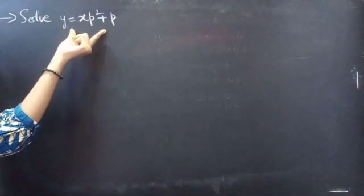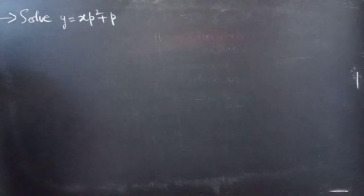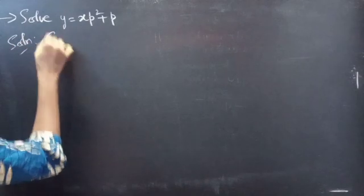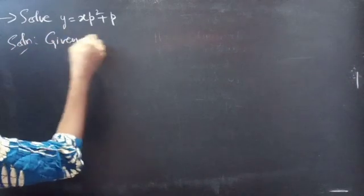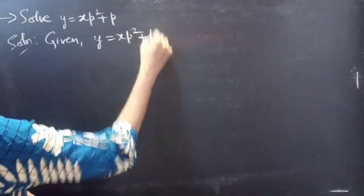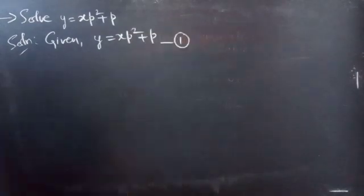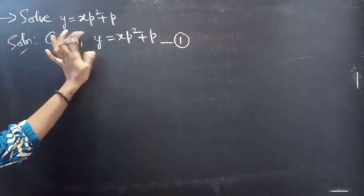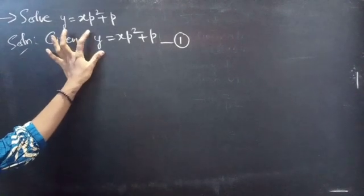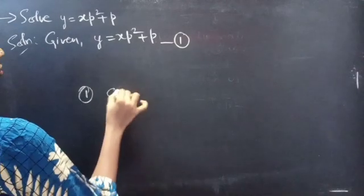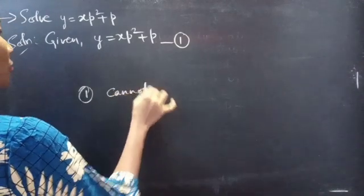Problem to solve: y equals xp squared plus p. Given equation y equals xp squared plus p, considered as equation 1. We notice that we cannot factorize the given equation.